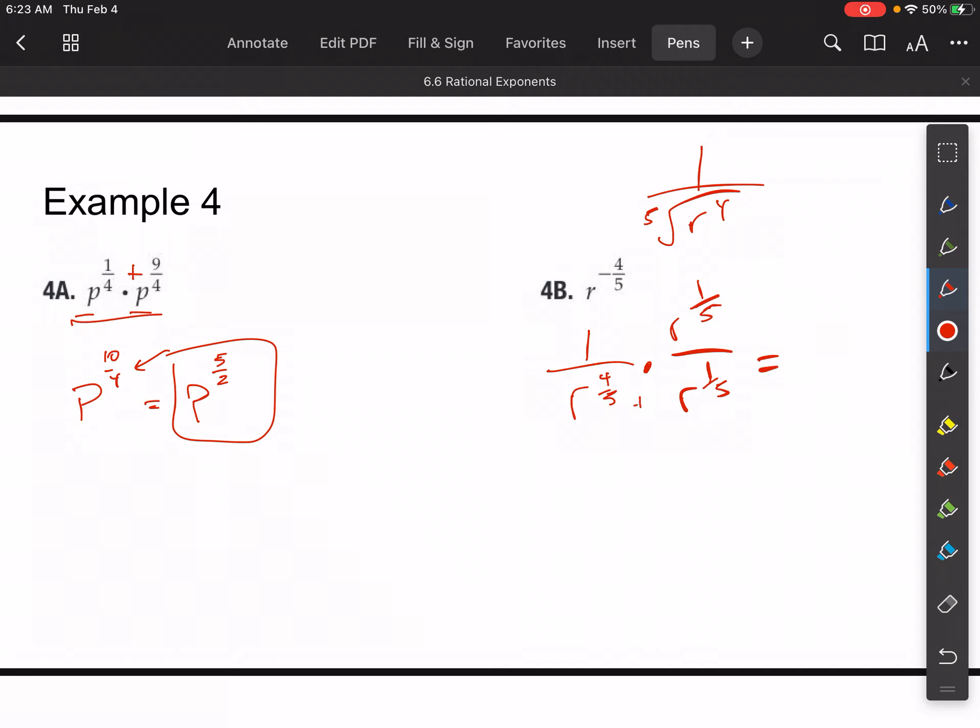Because I want r to the first power here to get rid of that fraction. So if I multiply that, it's the same thing as adding. 4-fifths plus one-fifth is five-fifths, so this is r, which is what I want.